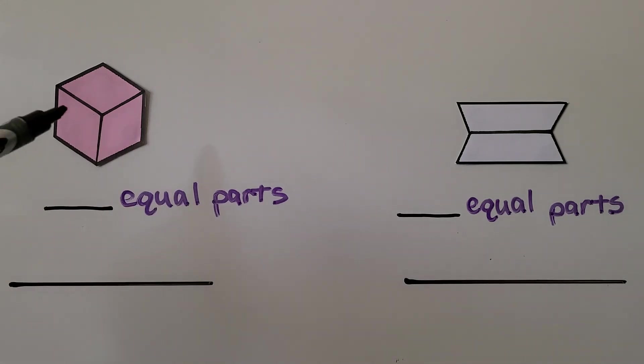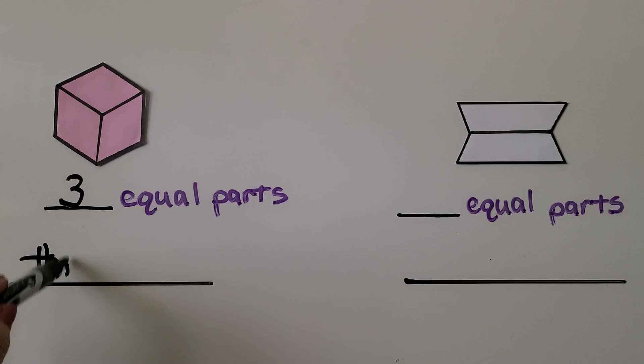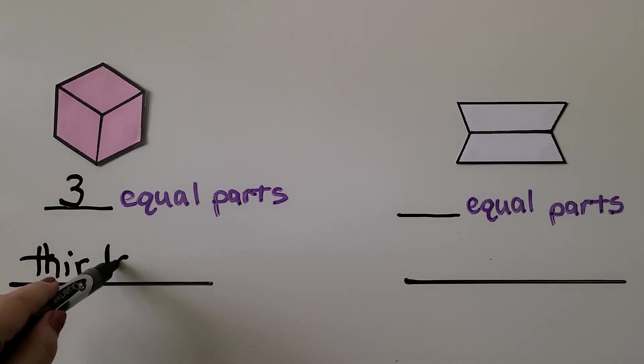And we can count. One, two, three equal parts. Three starts with th, so we know this is thirds. Thirds are three equal parts.